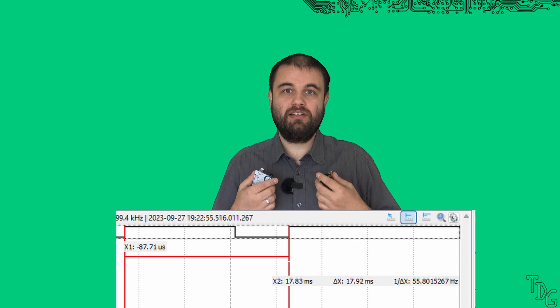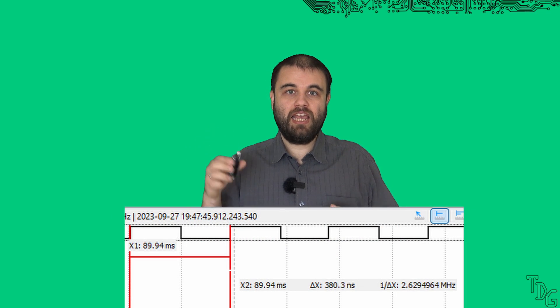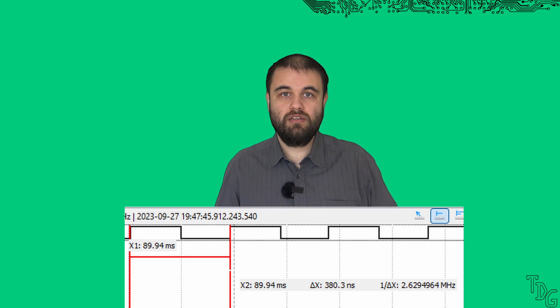The microbit blinks at about 55Hz and the blinking is visible by the naked eye. The Arduino Uno blinks over 2MHz and can be only measured with some instruments. Both of them are running the blinking example as fast as they can, but the Arduino is 47,000 times faster.